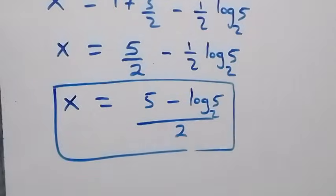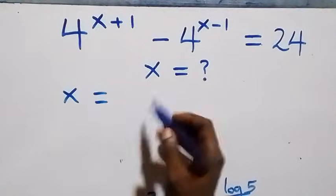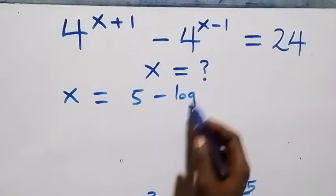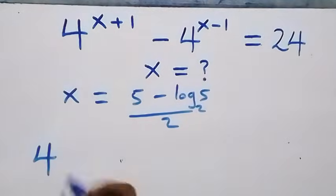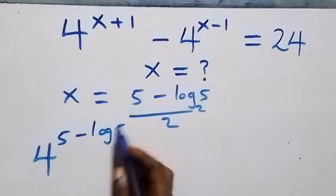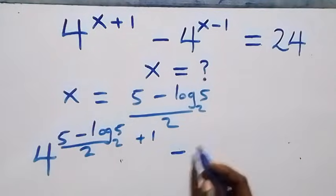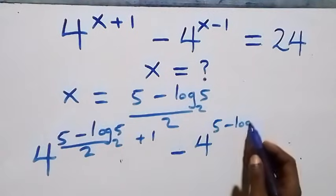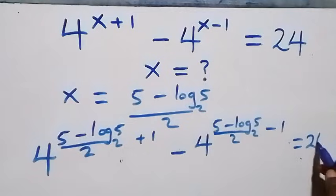So here we have the value of x in this problem as x equals 5 minus log base 5 of 2, over 2. Now let's check if this satisfies the given problem. That is, we substitute the value of x equals (5 minus log₅2) over 2 — then what we have becomes 4 raised to power (5 minus log₅2)/2 plus 1, minus 4 raised to power (5 minus log₅2)/2 minus 1, equals to 24.